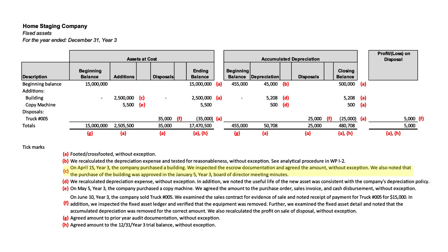Letter C takes us into some of the activity. On April 15th, the company bought a building. We inspected the escrow document and agreed the amount without exception. We also noted that the purchase was approved in the board minutes in January for $2.5 million.